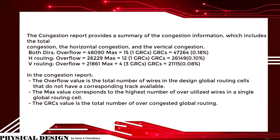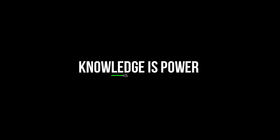The congestion report provides a summary of the congestion information, which includes the total congestion, the horizontal congestion, and the vertical congestion. The overflow value is the total number of wires in the design's global routing cells that do not have a corresponding track available. The max value corresponds to the highest number of over-utilized wires in a single global routing cell. The GRCs value is the total number of over-congested global routing cells.